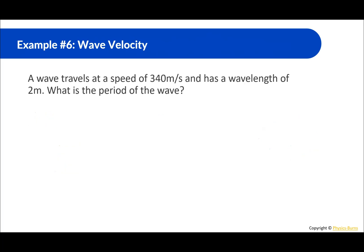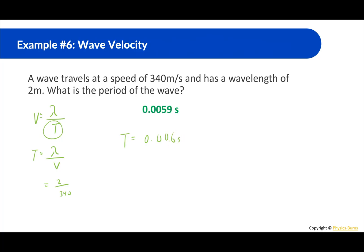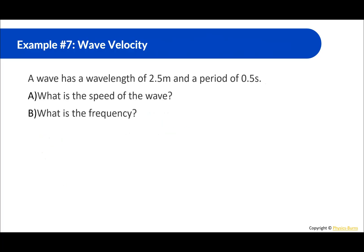A wave travels at a speed of 340 meters per second and has a wavelength of 2 meters. What is the period of the wave? We know velocity equals wavelength divided by period, and we're solving for period. Period equals wavelength divided by velocity: 2 divided by 340 gives a period of 0.006 seconds.